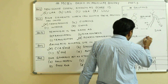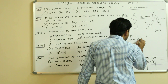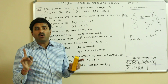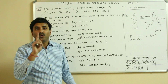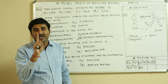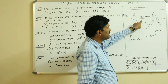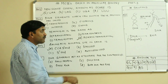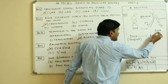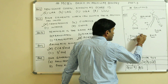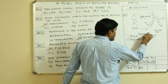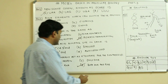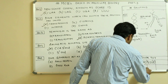DNA also acts as template for the synthesis of RNA. In RNA synthesis, only one strand of the DNA participates as template, while in replication both strands participate. So DNA generally acts as template for the synthesis of both DNA as well as RNA. Question number five is having the answer D.